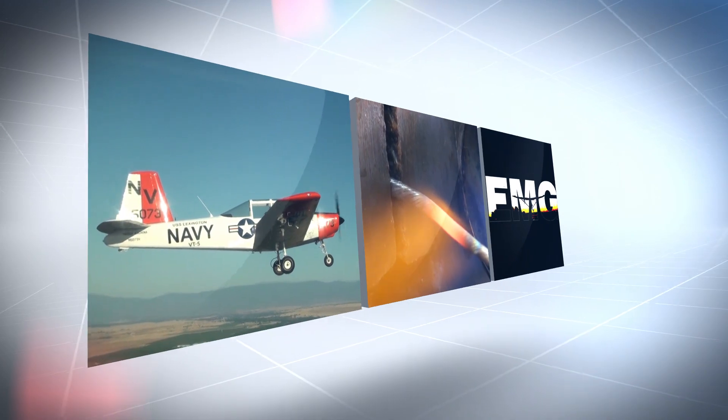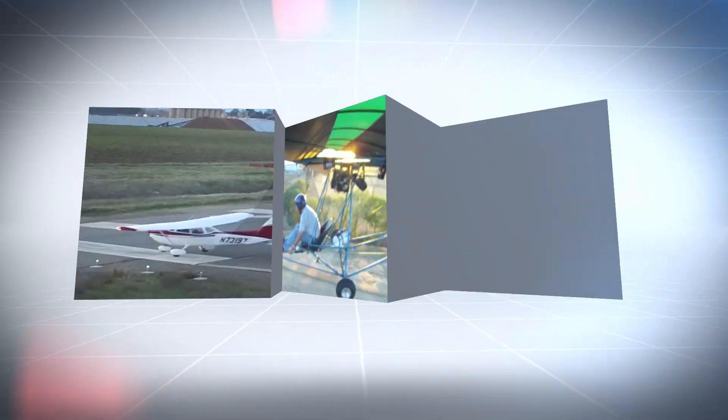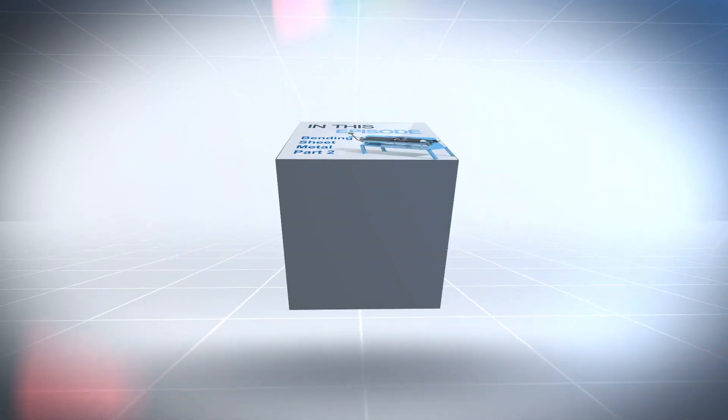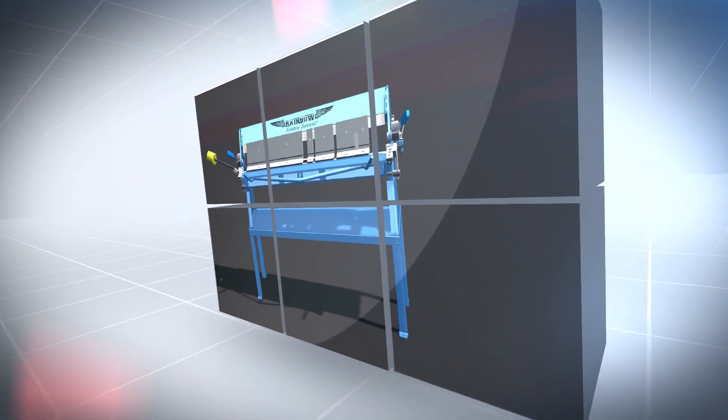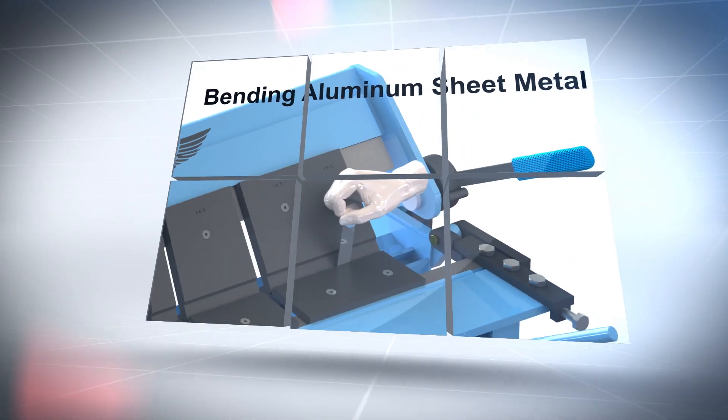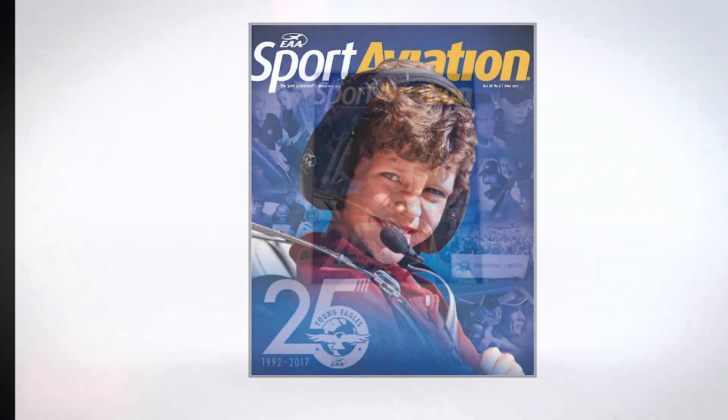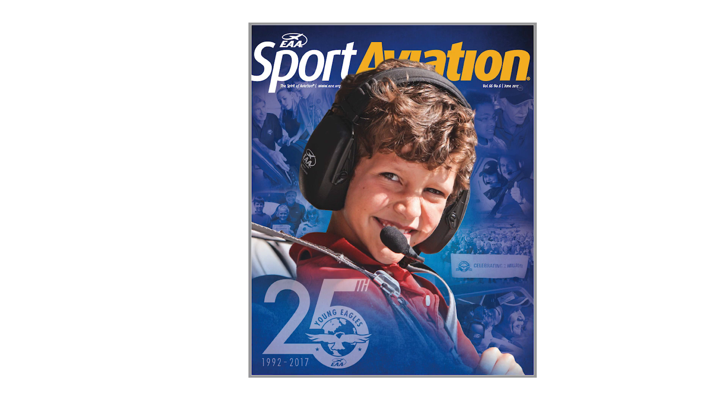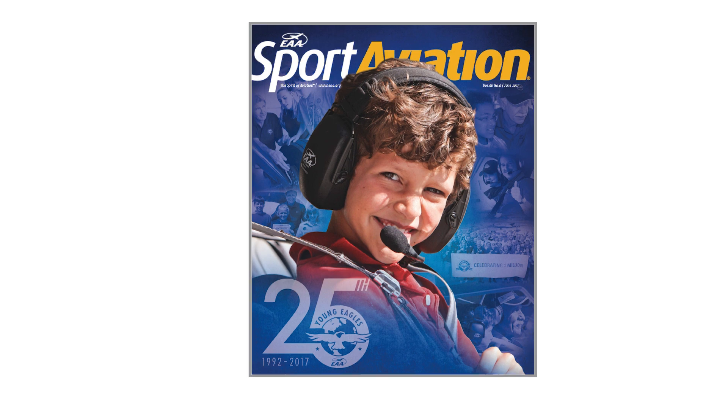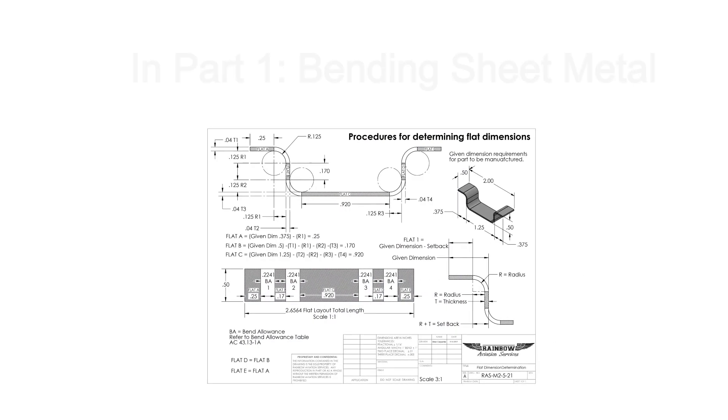This is the Rainbow Aviation Video Channel and I'm your host Brian Carpenter. In today's episode, part two of bending sheet metal for aircraft, we're going to be taking a look at using and setting up an aircraft sheet metal finger brake. This is a companion video for the Technically Speaking article published in the June 2017 Sport Aviation magazine.